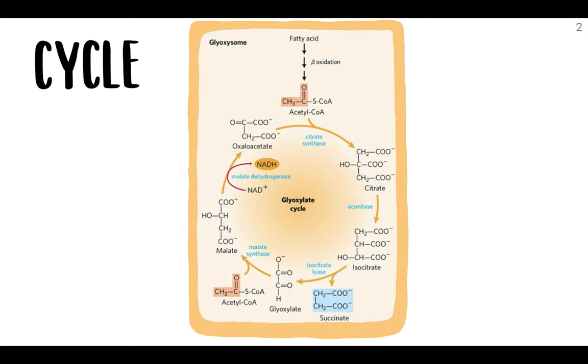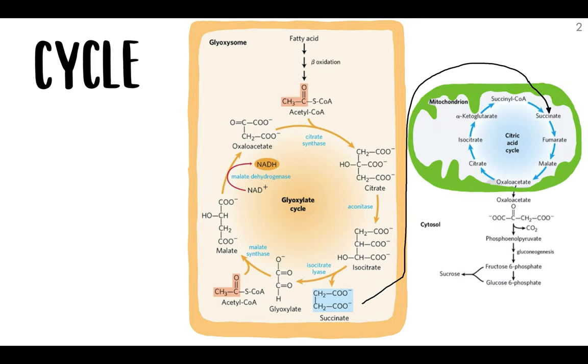So the succinate that was produced in a previous step from isocitrate using the enzyme isocitrate lyase can then pass into the matrix of the mitochondria and be converted into oxaloacetate.